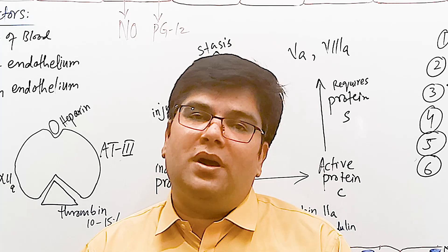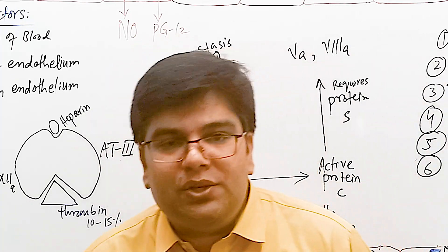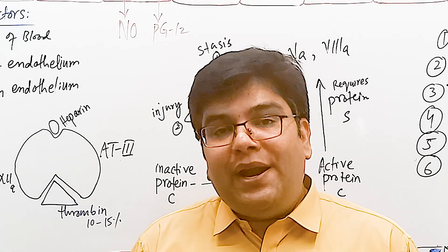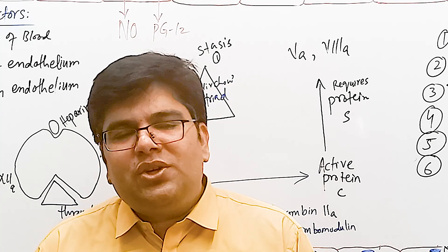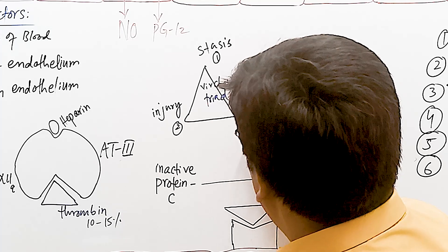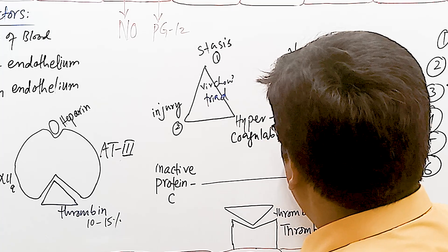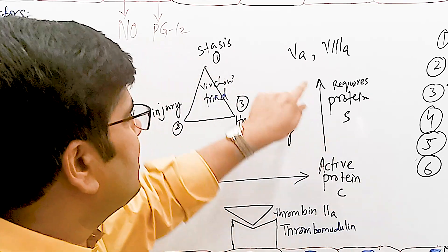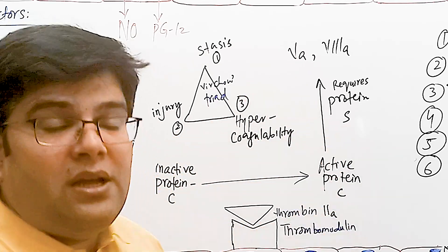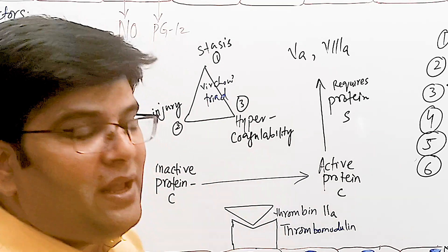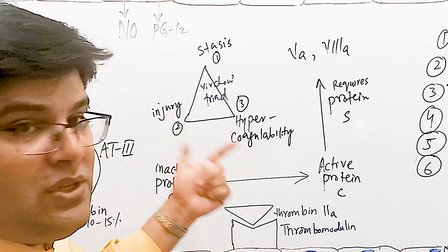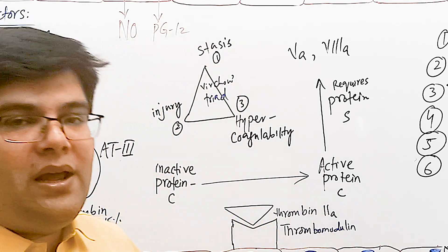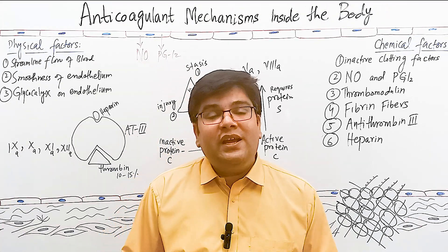The second factor in Virchow's triad is endothelial injury — when endothelium is injured by surgery, a cut, or trauma, there is less production of nitric oxide and prostaglandin I2, less anticoagulation, and more pro-coagulant factors are produced. The third factor is hypercoagulability, meaning pro-coagulant factors are increased or anticoagulants are decreased — for example, mutation of clotting factor 5, or deficiency of protein S or protein C — all of which increase risk of thrombosis.